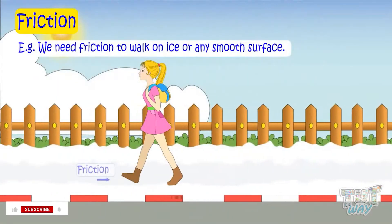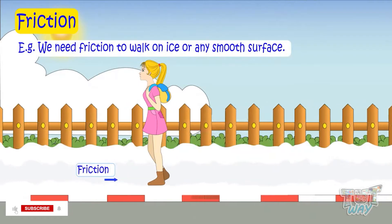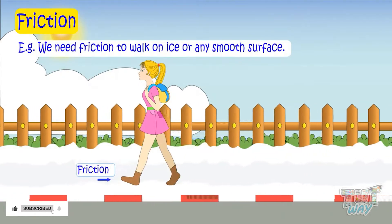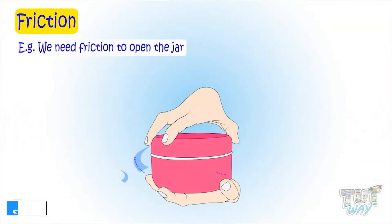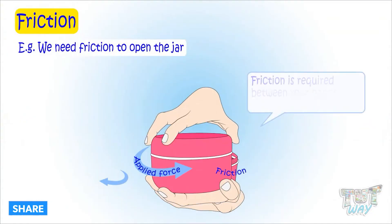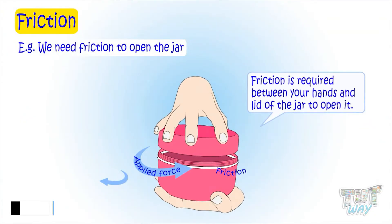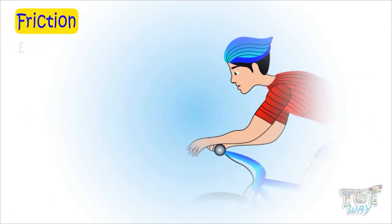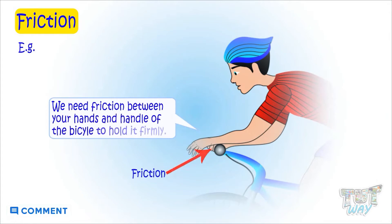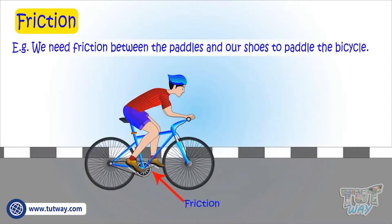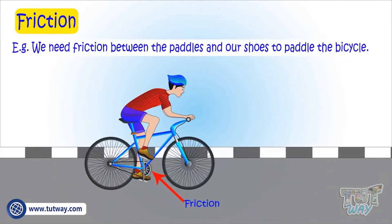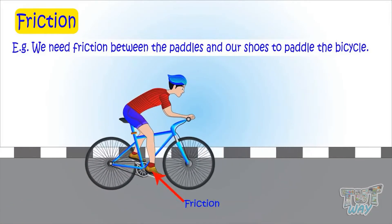For example, you need friction between your shoes and ice to walk on it. You need friction between your hands and the lid of the jar to open it. You need grip between your hands and the handle of the bicycle to hold it firmly. You need friction between your shoes and the paddles of the bicycle to paddle it.